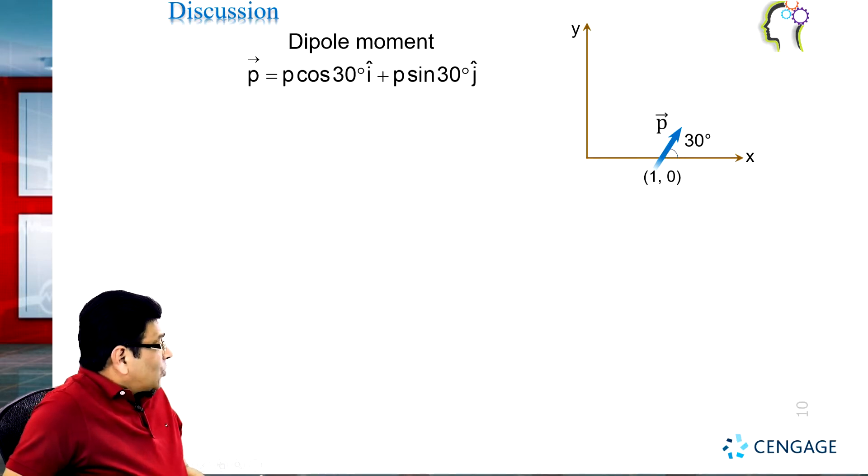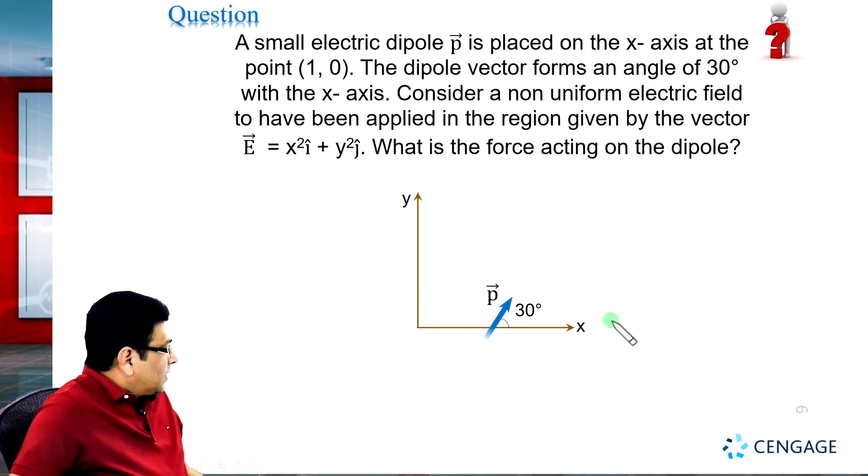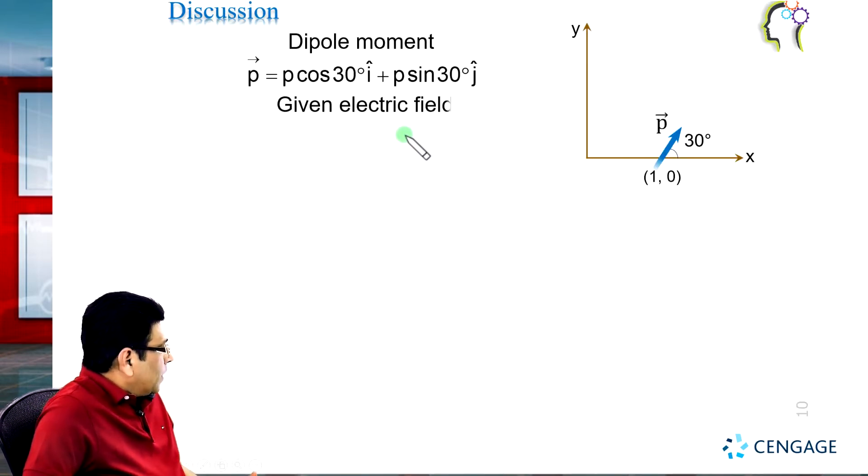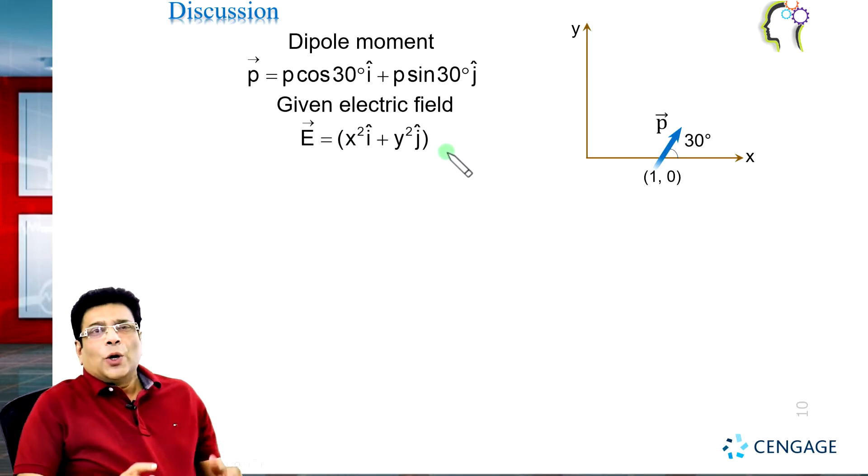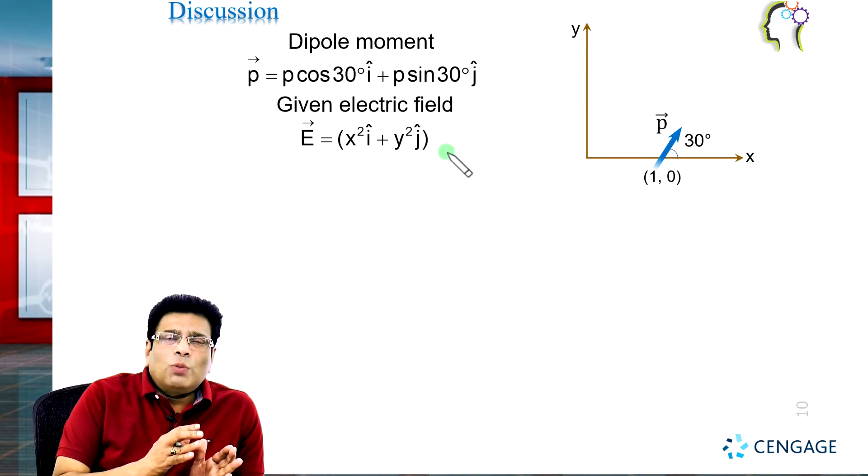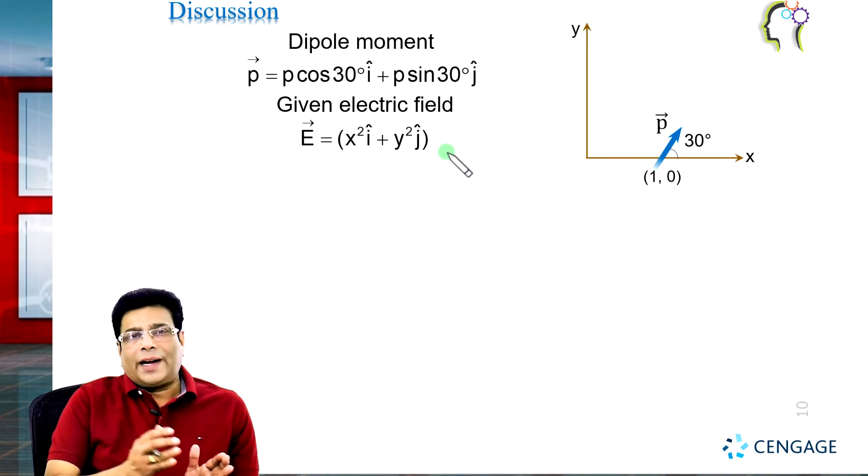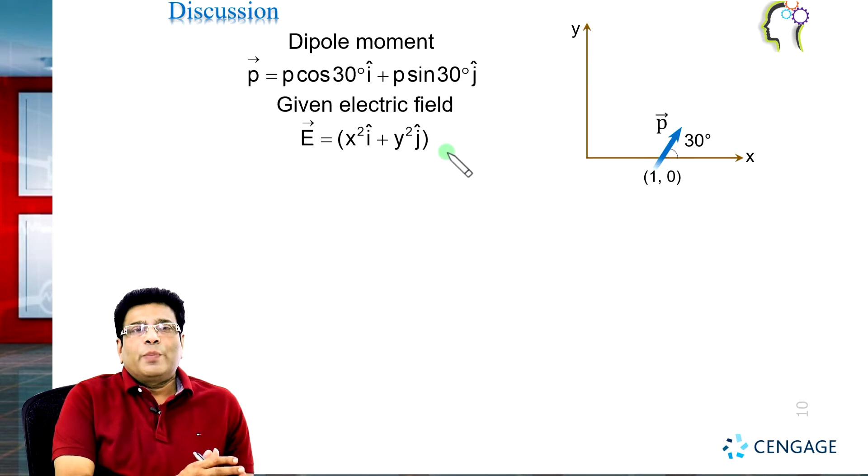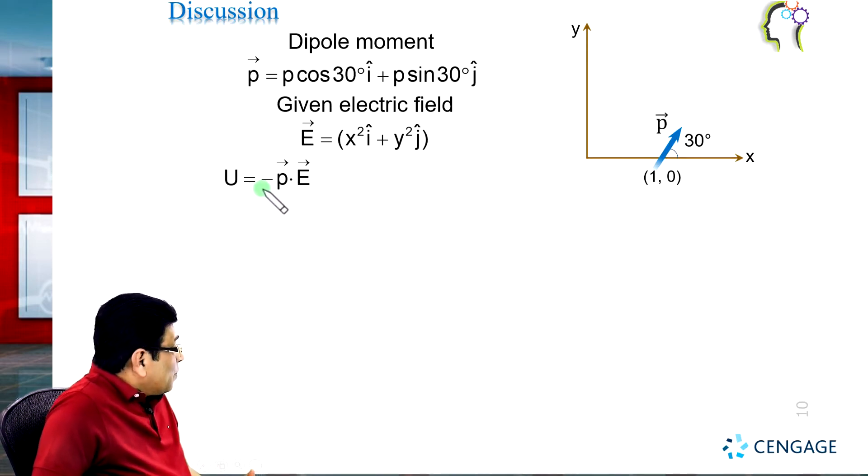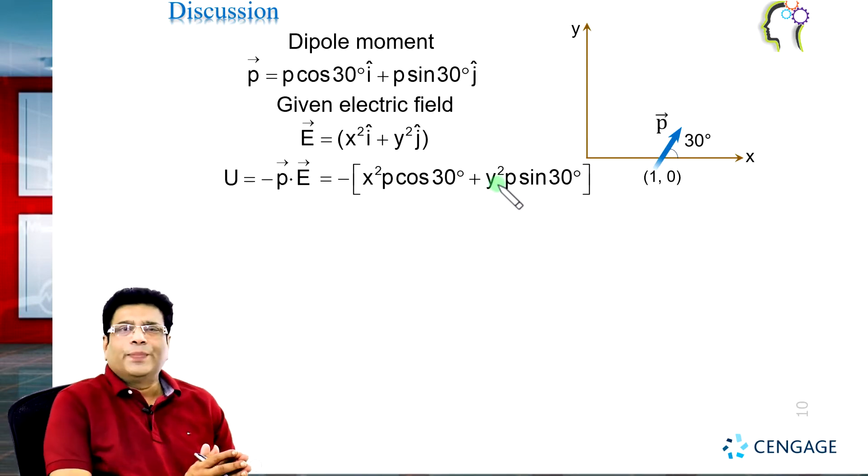We are given an external electric field which is non-uniform. We can write the potential energy of the dipole associated with the electric field, which is equal to minus p dot E. This is the dot product of vector p and vector E. That means this quantity should be equal to x² multiplied by p cos 30° plus y² multiplied by p sin 30°.